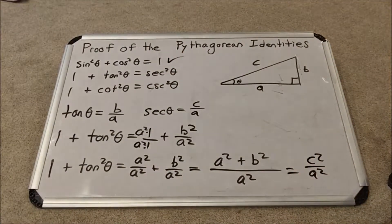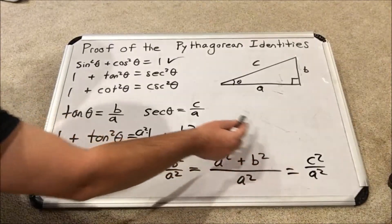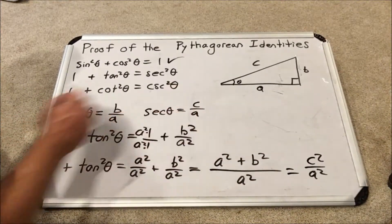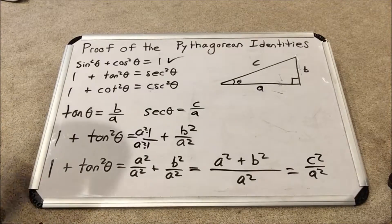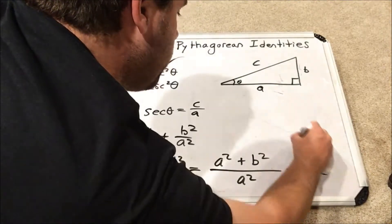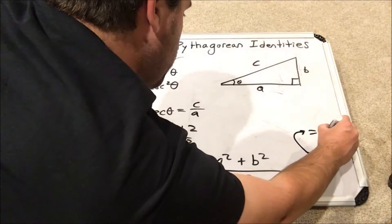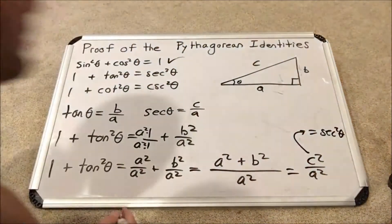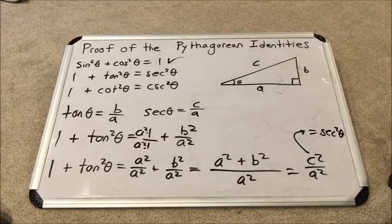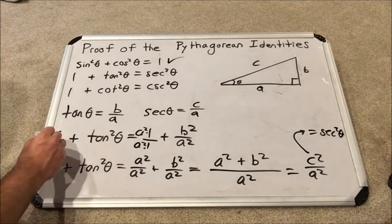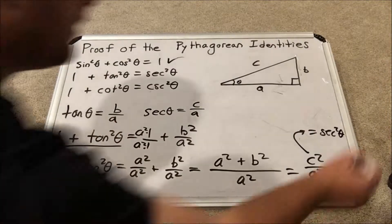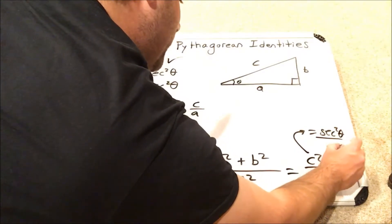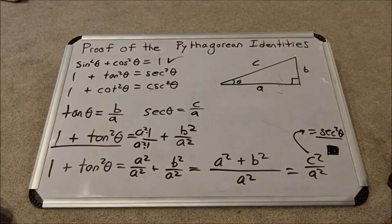Now that might look familiar — if you jump back up, it's equal to c over a squared, which is secant theta squared. So it equals secant squared theta. We have a direct connection between 1 plus tangent squared theta and secant squared theta. We have done the proof of the second trigonometric identity.